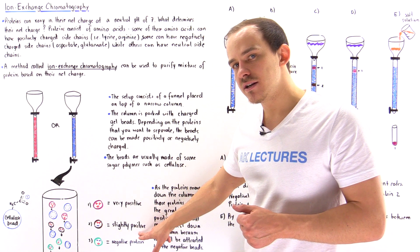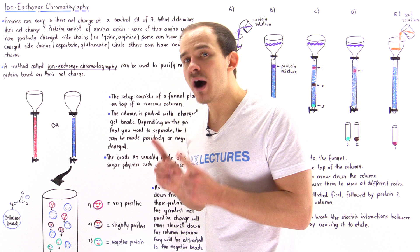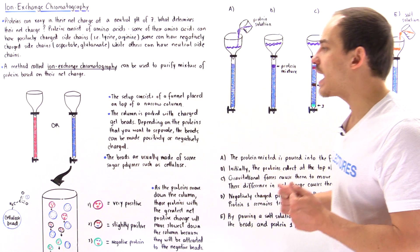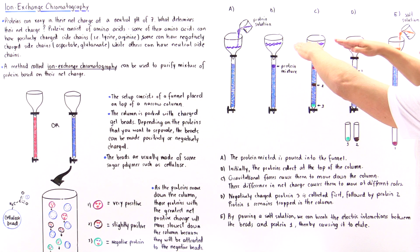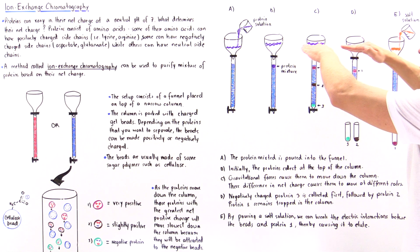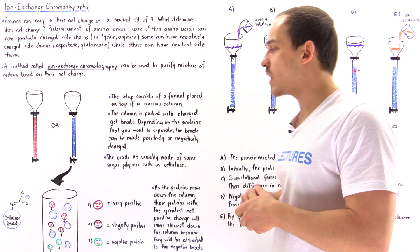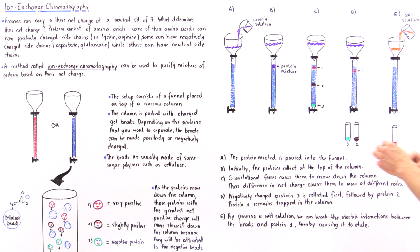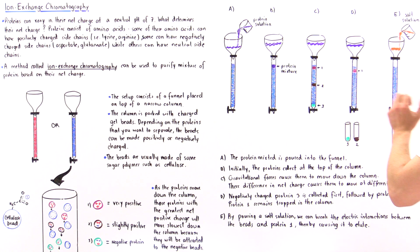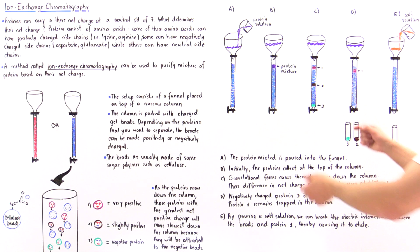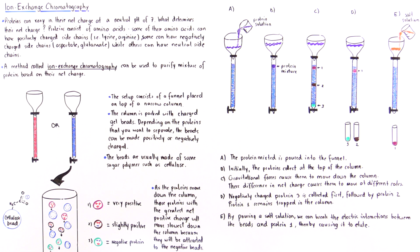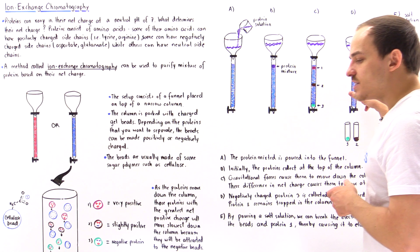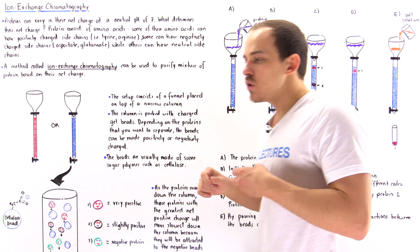The slightly positive protein two will be attracted to the beads but also pulled down by gravity. Because the attraction isn't that great, it ends up somewhere in the middle. Protein one, with the very strong positive charge, stays at the top due to strong electric attraction to the beads. When protein three reaches the bottom first, we open the knob and collect it in a test tube. We then wait longer and collect protein two in a second test tube.